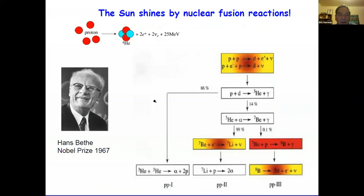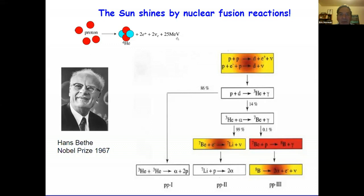What makes a star shine? This was figured out in the 1930s by Hans Bethe, who showed it is nuclear fusion reactions that power the Sun and all other stars. In our Sun and most stars, the fusion of hydrogen to helium is ongoing. Schematically, four protons fuse together to make one helium-4 nucleus. To conserve electric charge you emit two positrons, and to conserve angular momentum and lepton number you emit two electron-type neutrinos, releasing 25 MeV of energy each time.